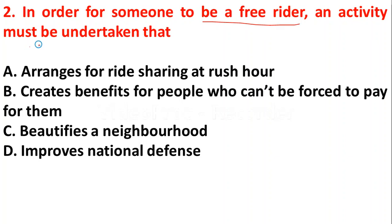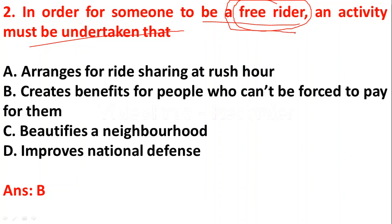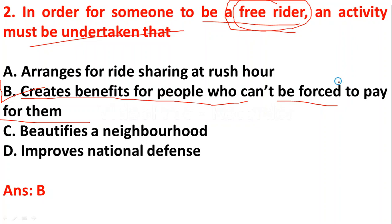Question 2: In order for someone to be a free rider, an activity must be undertaken that: option A - arranges for ride sharing at rush hour; option B - creates benefits for people who can't be forced to pay for them; option C - beautifies the neighborhood; option D - improves national defense. The right answer is option B. A free rider is a person who uses goods and services free of cost without paying, enjoying benefits they haven't paid for.